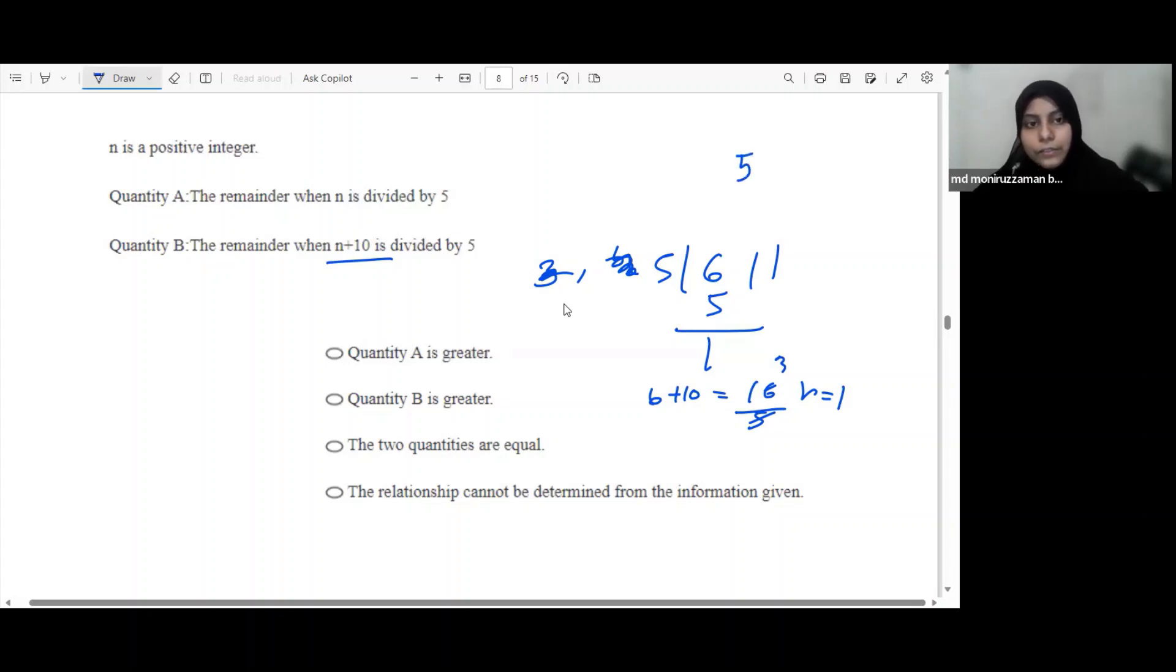Let us see that n equals to 7. That is 5 divided by 7. If we see that, we will see that 5 divided by 7, plus 10, plus 17, so that is 2. So that the remainder is same.